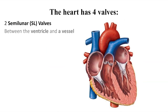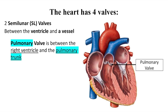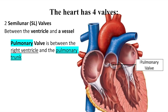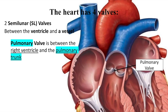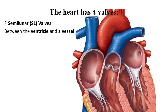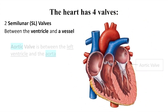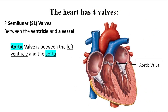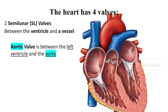The semilunar valves are located between a ventricle and a great vessel. The pulmonary valve is located between the right ventricle and the pulmonary trunk. The aortic valve is located between the left ventricle and the aorta.